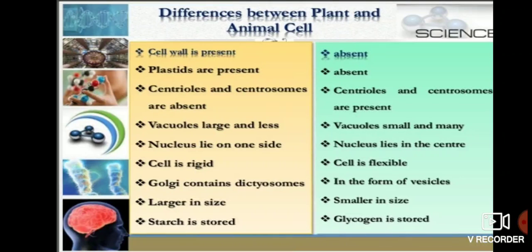Plant cells are rigid because the cell wall is present. Animal cells are flexible because the outer layer is the cell membrane, which is flexible as it is made up of lipoprotein.